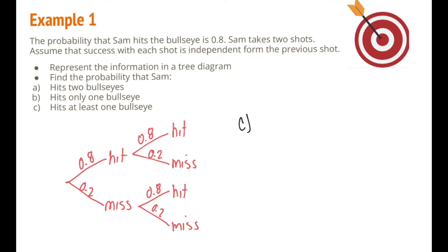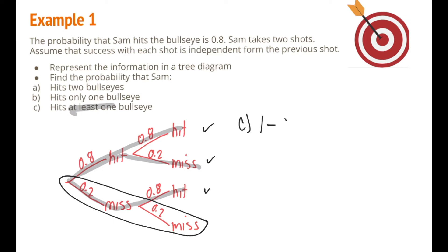Part c: find the probability that Sam hits at least one bullseye. At least one means one or more, so that includes exactly one (hit-miss or miss-hit from part b) and also two bullseyes. There are two ways to solve this: add up all three probabilities, or subtract from one the probability he misses twice. Using the complement: 1 − (0.2 × 0.2) = 0.96.